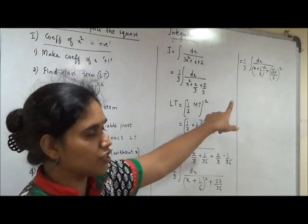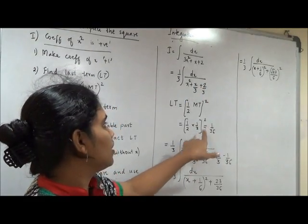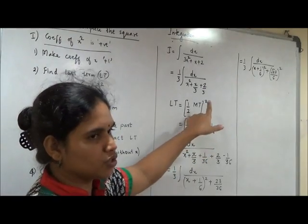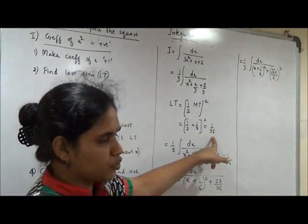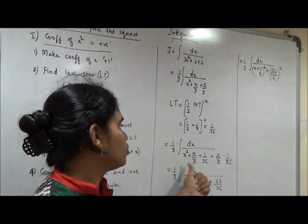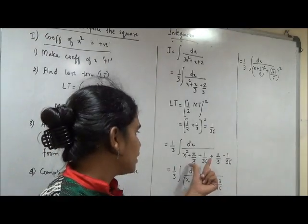Last term is half of middle term bracket square. Middle term is the coefficient of x. That number taken square it. Even if it's a negative number it doesn't make a difference. You are going to square it so it's a positive number. This constant number which you get is the last term. You have to add to the variable part and subtract from the constant number.